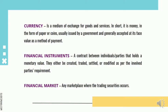A financial instrument is a contract between individuals or parties that holds a monetary value. They can either be created, traded, settled, or modified as per the involved parties' requirements. A financial market is any marketplace where the trading of securities occurs — where trading of securities and exchanging of currency or money for things happen.